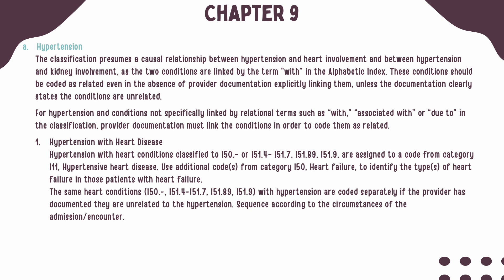The first topic in Chapter 9 is Hypertension. The guidelines state that we can assume a causal relationship between hypertension and heart involvement, as well as between hypertension and kidney involvement. The exception is if the documentation clearly states the conditions are unrelated. So if the medical record states the patient has hypertension and chronic kidney disease, we can assume they are related and code it as hypertensive chronic kidney disease.